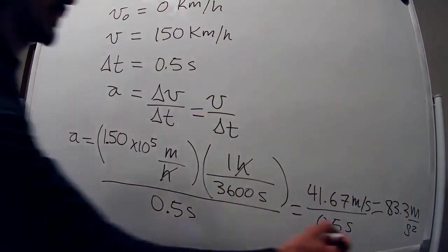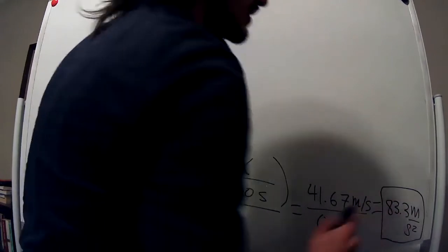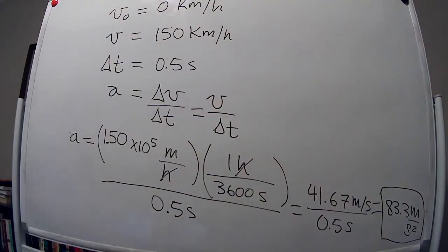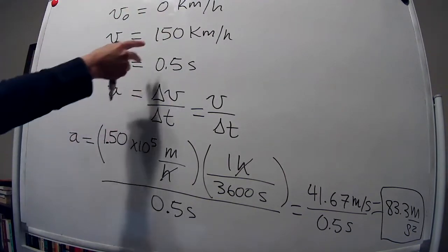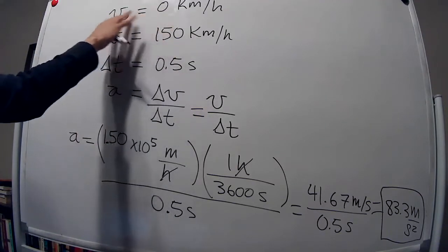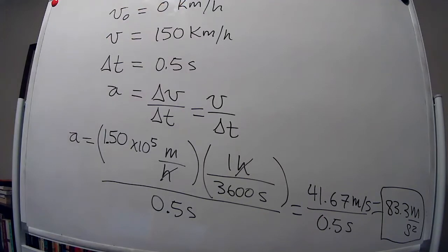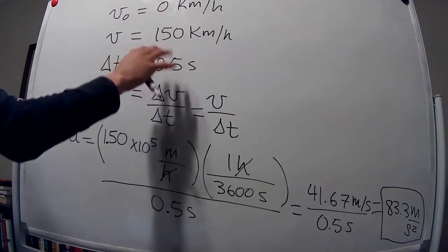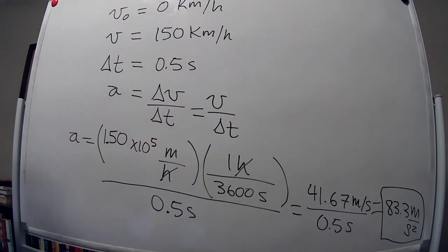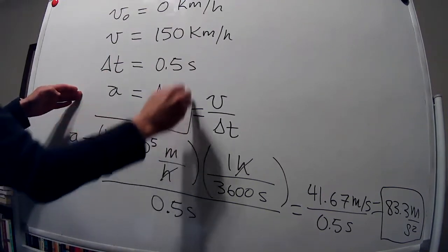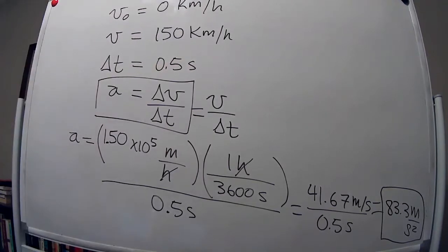This is the answer found in the homework. This was very straightforward — you're given two quantities explicitly, and implicitly they tell you it starts from rest, meaning zero kilometers per hour. So you're given three quantities, and that's all you need to calculate the acceleration using the direct definition of acceleration.